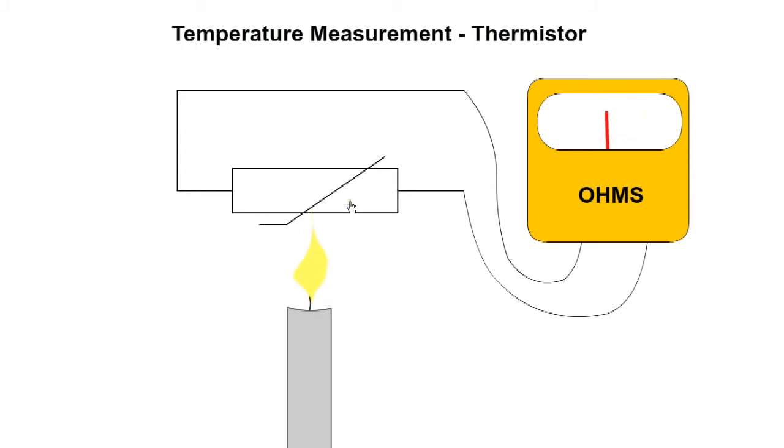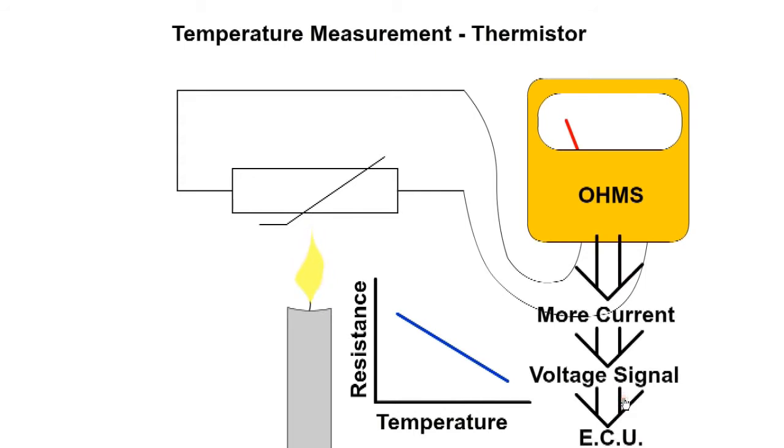Temperature sensors use a thermistor which is sensitive to changes in temperature. It has a negative temperature coefficient—the resistance of the thermistor decreases as temperature rises. They are used for intake air and coolant temperature. When resistance decreases, there is an increase in current which is converted to a voltage signal for the ECU.